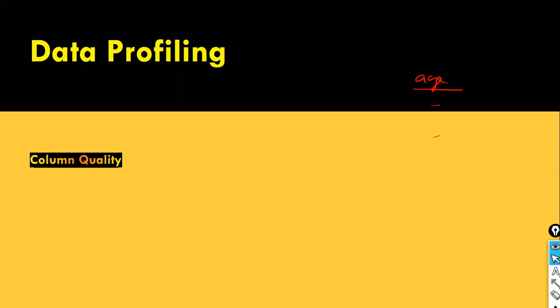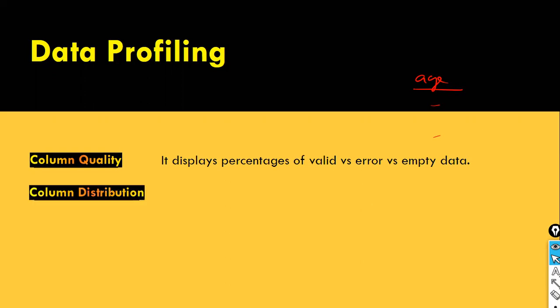As for data profiling in Power BI, there are three types. We can do the data profiling at the column level. The first type is column quality, which displays the percentage of valid versus error versus empty data. The second is column distribution, which helps us understand the number of occurrences of values or categories in a categorical variable. For example, if you have a region as a categorical variable and see a taller rectangle for the north region, that indicates more records for that region.